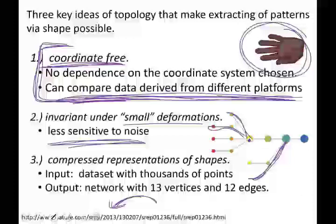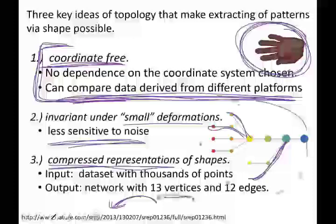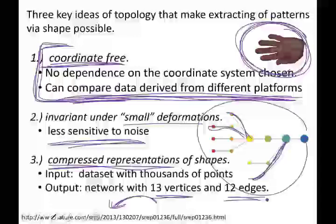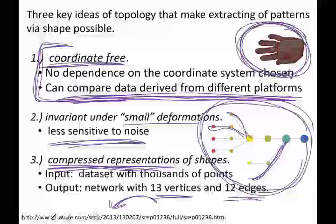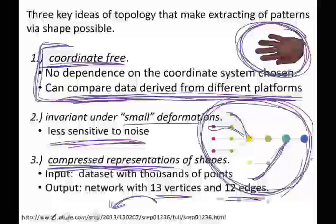The third advantage is that we get a compressed representation. We went from thousands of data points down to a graph with only 13 vertices and 12 edges — a much simpler representation. Mapper allows you to represent your data in a way that's much simpler than the original, giving a nice visualization with far fewer vertices.